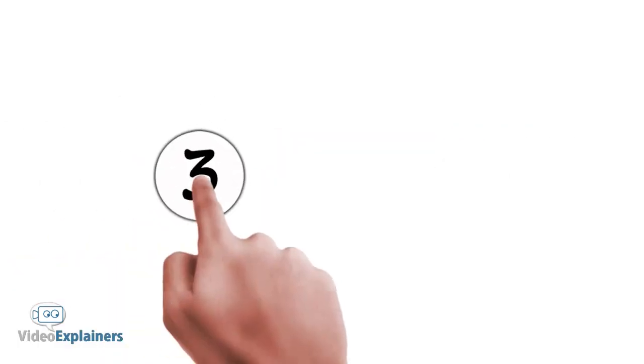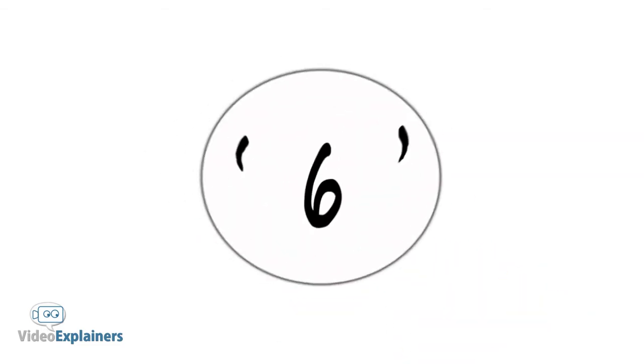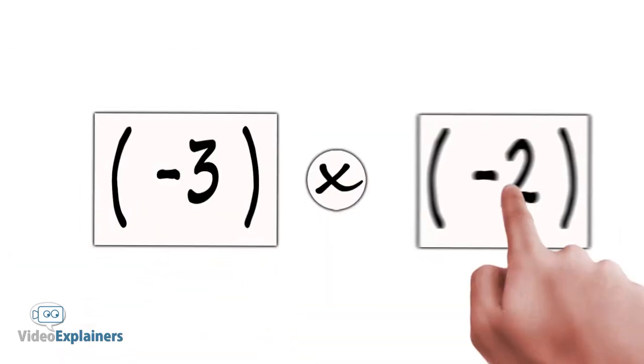When you multiply two positives, you get a positive. When you multiply two negatives, you get a positive.